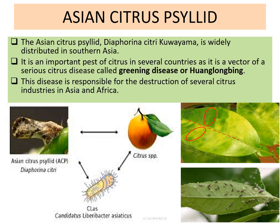This disease is responsible for the destruction of several citrus industries in Asia and Africa. The Asian citrus psyllid is a carrier of the bacterium Candidatus Liberibacter asiaticus, which is responsible for this greening disease.